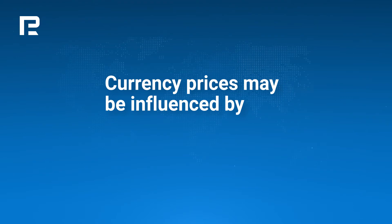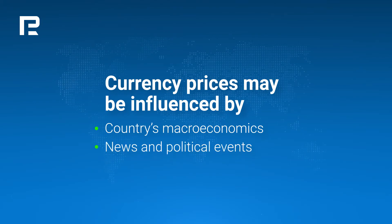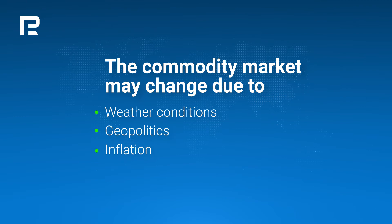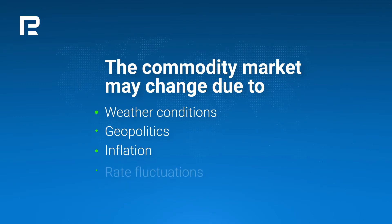As for currency prices, they are influenced by a much greater number of factors — for example, the macroeconomics of a country. Things such as the unemployment rate, inflation, gross domestic product, and other news and political events are very important for the forex market. Since we're buying one currency while selling the other, we need to know about the economies of both countries as much as possible. The commodity market may be influenced by weather conditions, geopolitics, inflation, currency rate fluctuations, and monetary policies of global central banks.